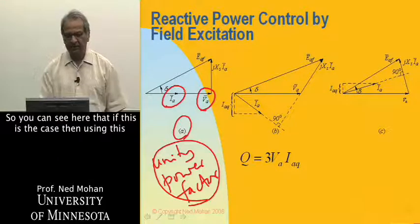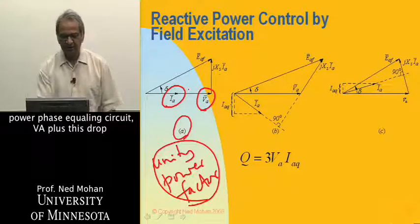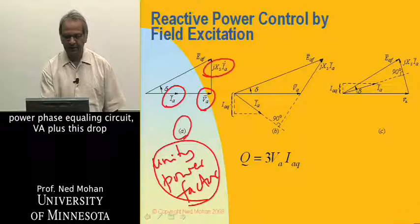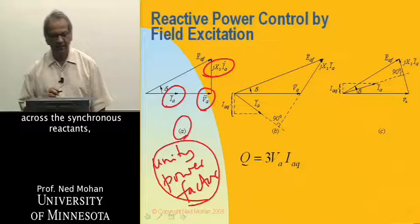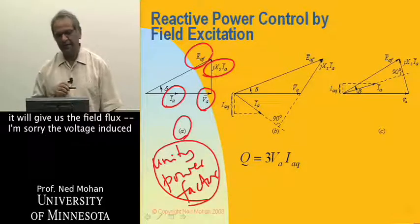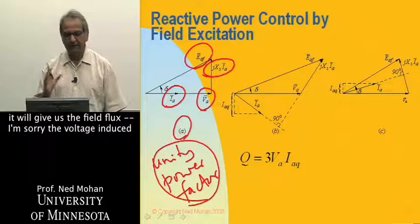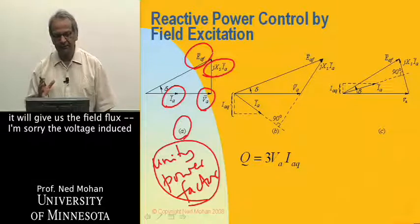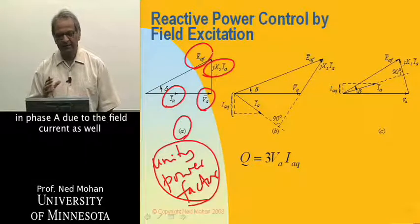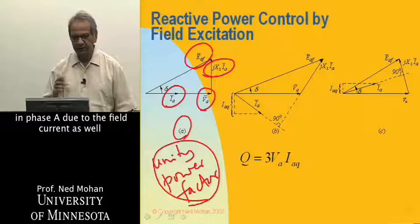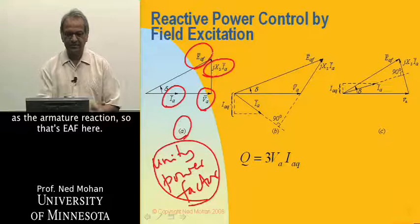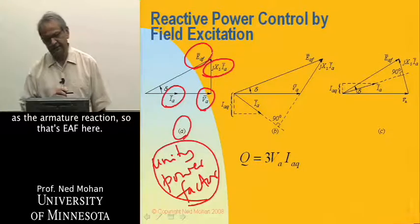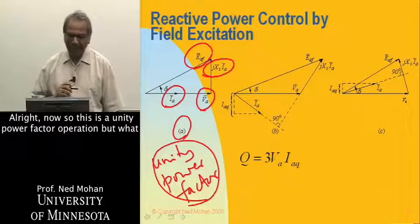Using this per-phase equivalent circuit, VA plus the drop across the synchronous reactance gives us the voltage EAF — the voltage induced in phase A due to the field current as well as the armature reaction. So that's EAF here.